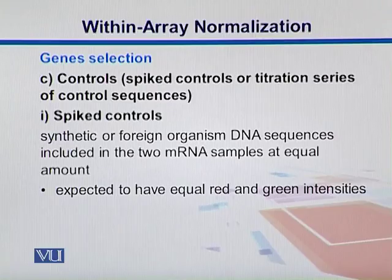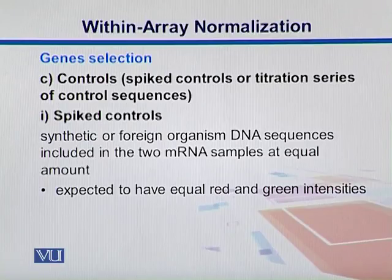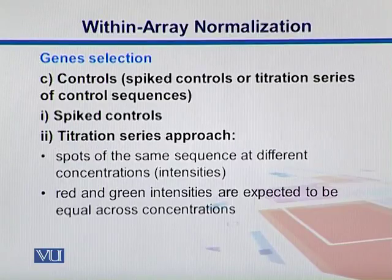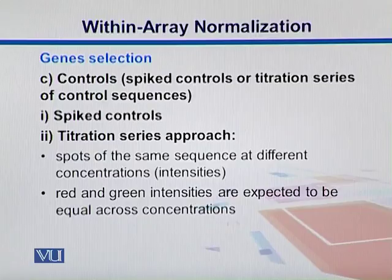We can have controls. For example, we can have spike controls or a titration series of control sequences. What we do here is take synthetic or foreign organism DNA sequences and put them into messenger RNAs at equal amounts. Then we can have equal red and equal green intensity, which allows us to control the biasness toward attaching with those differential dyes. In the second scenario, you can take spots of the same sequence at different concentrations, and the red and green intensities are expected to be equal across different concentrations, allowing you to observe how red and green behave at different concentrations and neutralize the effect of dye biasness.